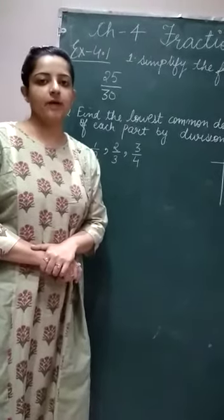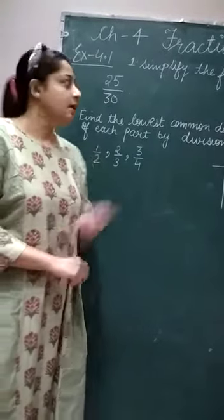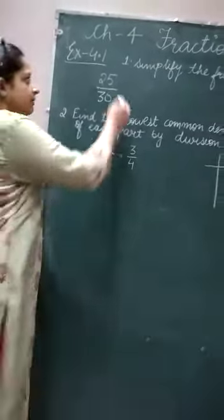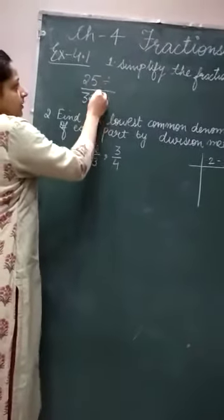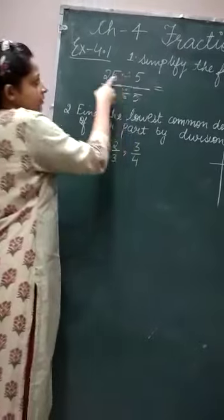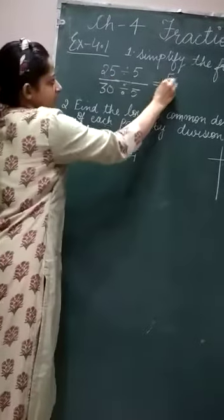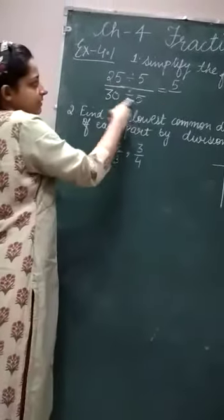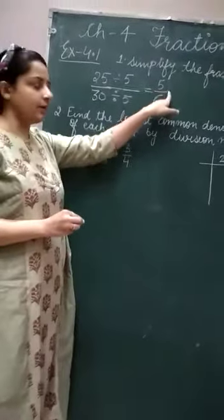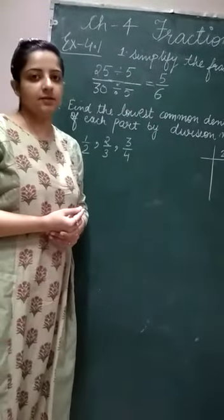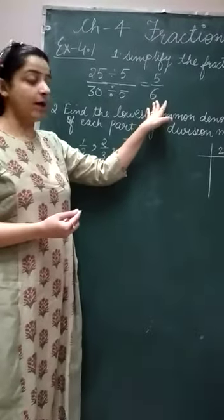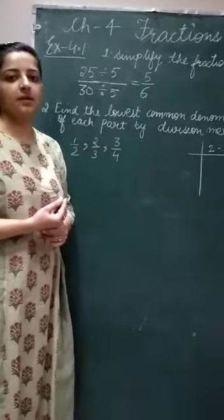To reduce the fraction into lowest terms, 25 upon 30 is given. To reduce it into lowest terms, we will divide both numerator and denominator by 5. 25 divided by 5 gives 5, and 30 divided by 5 gives 6. The numerator and denominator have no common factor other than 1, which means our fraction is reduced to the simplest terms.